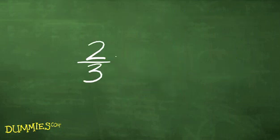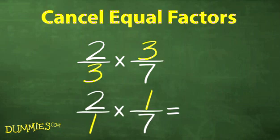When multiplying fractions, you can often make the job easier by canceling out equal factors in the numerator and denominator. That makes the numbers that you're multiplying smaller and easier to work with, and it also saves you the trouble of reducing at the end.